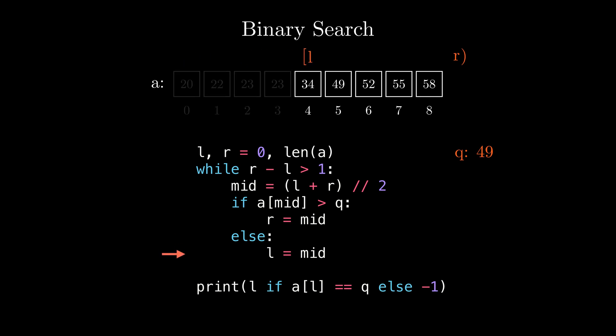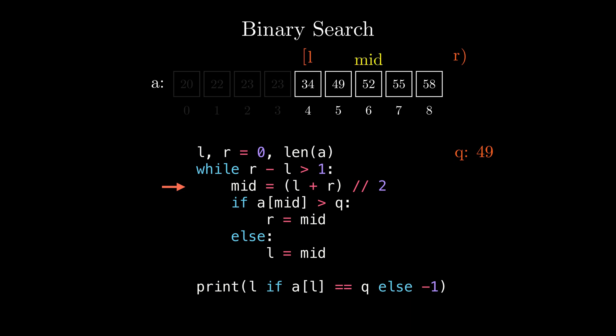That way, the search space would be reduced to only the right part of the array. We will go back to the start of the while loop. As there are still elements in between L and R — R minus L is equal to 5 which is greater than 1 — we will enter the loop. We will calculate mid as 4 plus 9 divided by 2, which is 6.5, rounded down to 6. After that, we will check if 52 is larger than 49 and as it is larger, we will set R to 6.